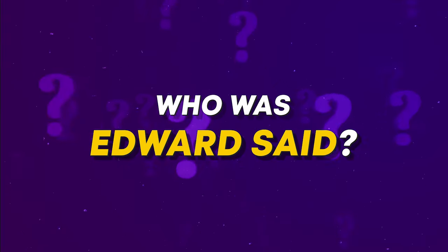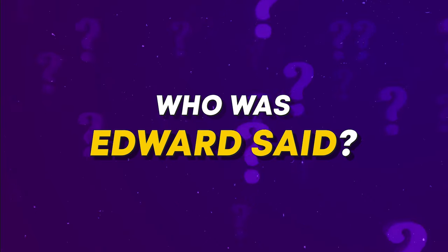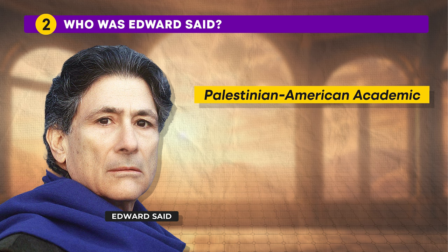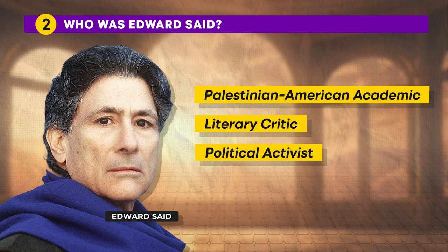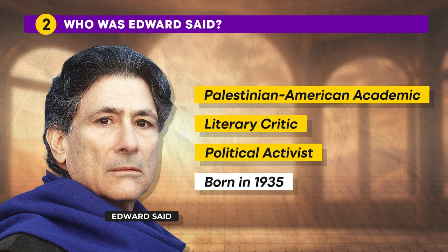Who is Edward Said? Edward Said was a Palestinian-American academic, literary critic and political activist. He was born in 1935 and grew up in Jerusalem and Cairo, later studying at Princeton and Harvard. Despite his elite education, his Middle Eastern heritage made him an outsider in Western academic settings. His work, Orientalism, reshaped how we understand literature, culture and the Middle East especially.